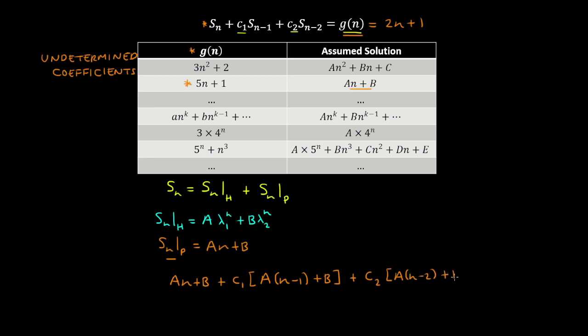So what you do is expand and simplify this left-hand side of the equation, and then you equate it to the right-hand side, which is 2n plus 1.